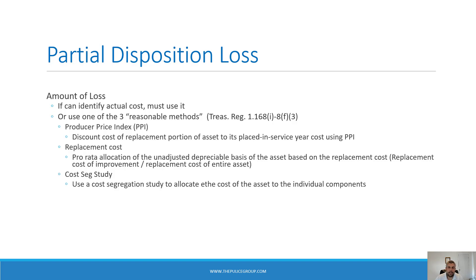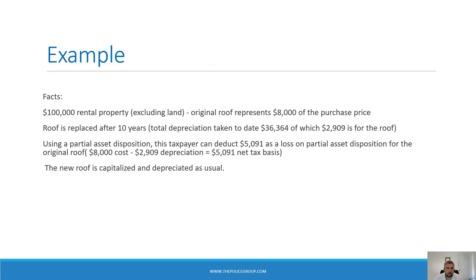The third method — and by far the best for most taxpayers — is a cost segregation study. A cost seg study is an engineering-based study designed to reallocate the cost of the property among its various components. A cost seg study will allocate a specific cost to the roof and other building components so they can be easily identified.